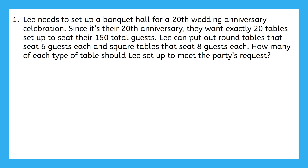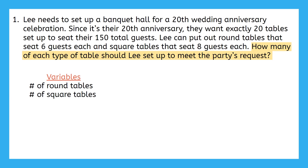Let's read through this together. Lee needs to set up a banquet hall for a 20th wedding anniversary celebration. Since it's their 20th anniversary, they want exactly 20 tables set up to seat their 150 total guests. Lee could put out round tables that seat six guests each and square tables that seat eight guests each. How many of each type of table should Lee set up to meet the party's request? This feels like a lot, but I know I can take it one step at a time, starting with my variables. What are my variables in this problem — in other words, what two things do I not know yet? Sometimes the question itself can help with this. It asks how many of each type of table Lee should put out. That tells me that I don't know yet how many round tables he needs and how many square tables he needs. Those are my two variables.